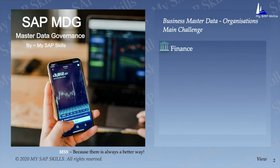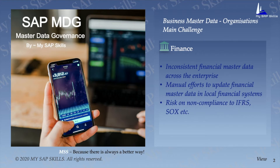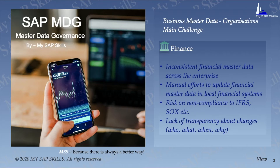In finance management, every finance officer has to deal with inconsistent financial master data across the enterprise. They have to put lots of manual effort to update financial master data in local financial systems. They also have huge risk of non-compliance to IFRS, SOX, etc. Lack of transparency about master data changes — who changed the data, what data was changed, when it was changed, and most importantly, why it was changed — are leading challenges in maintaining business master data.